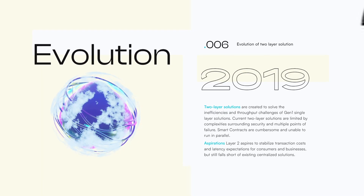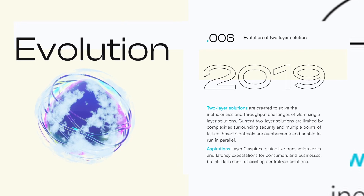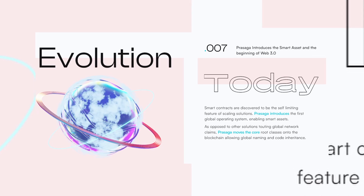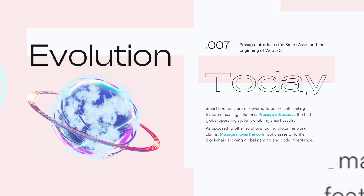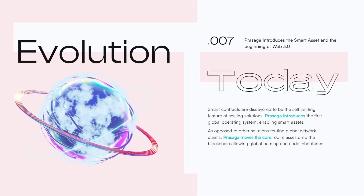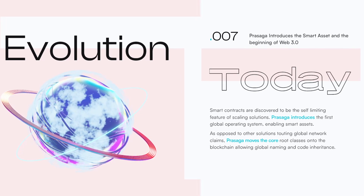The year 2019 saw the creation of second-layer solutions to solve the inefficiencies and throughput challenges of Gen 1 single-layer solutions, which leaves one final step — today. Prasaga introduces the first ever global operating system that enables smart assets. In contrast to other solutions touting global network claims, Prasaga moves the core root classes onto the blockchain, allowing global naming and code inheritance.